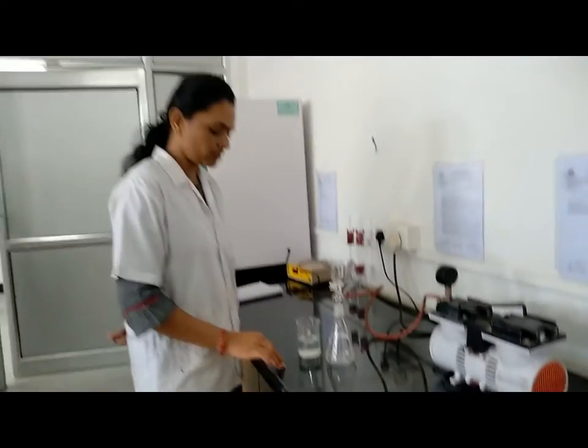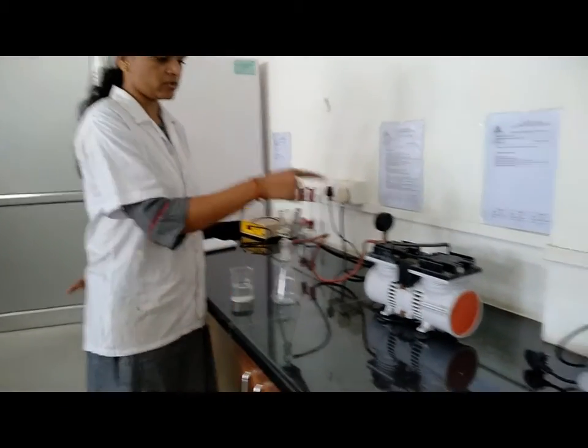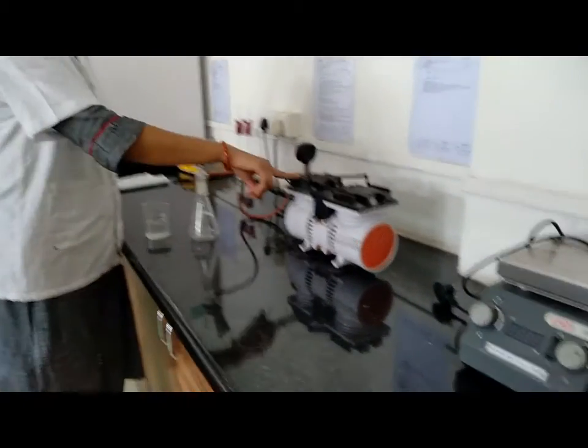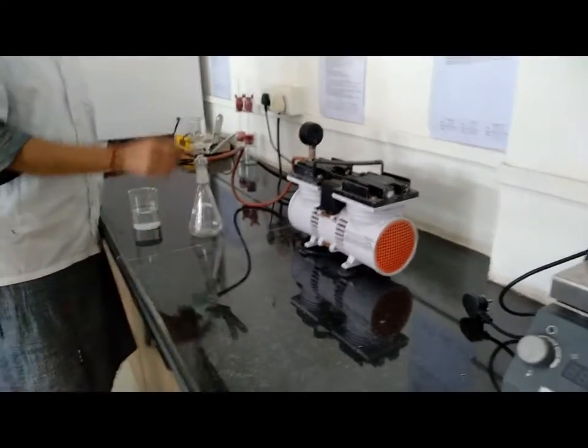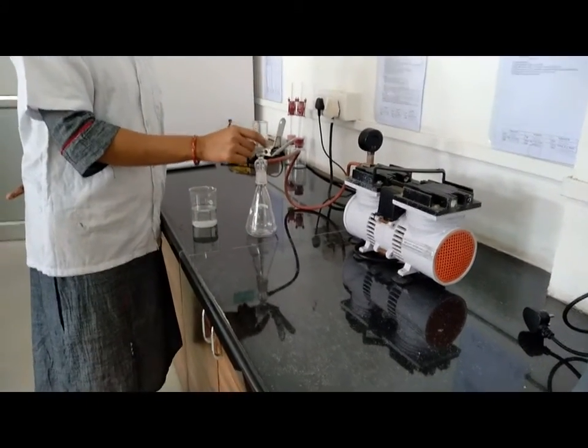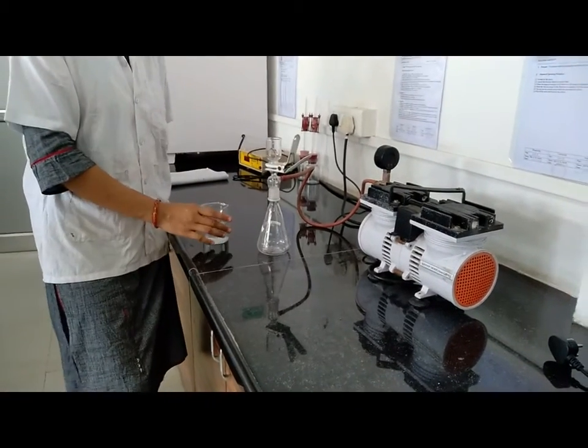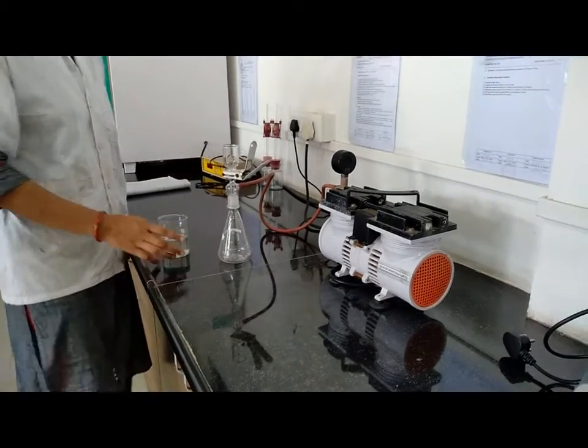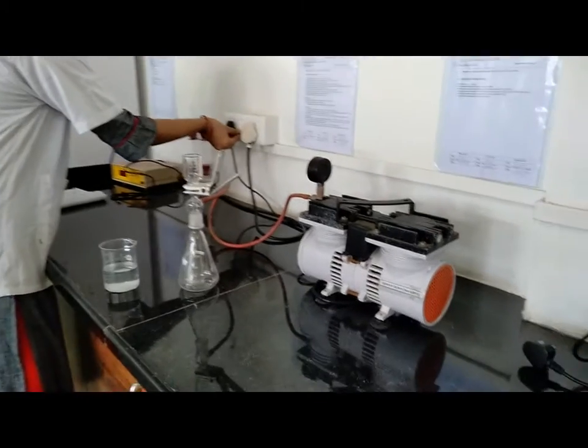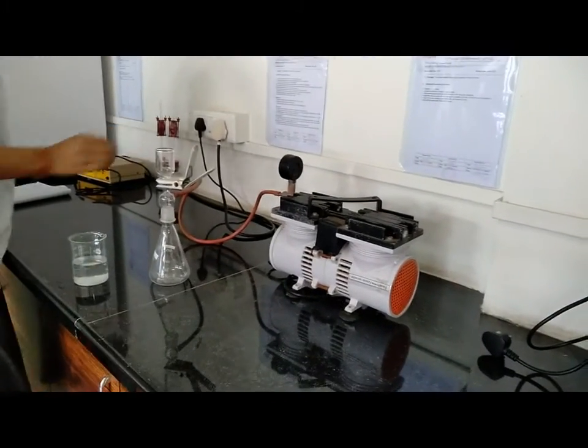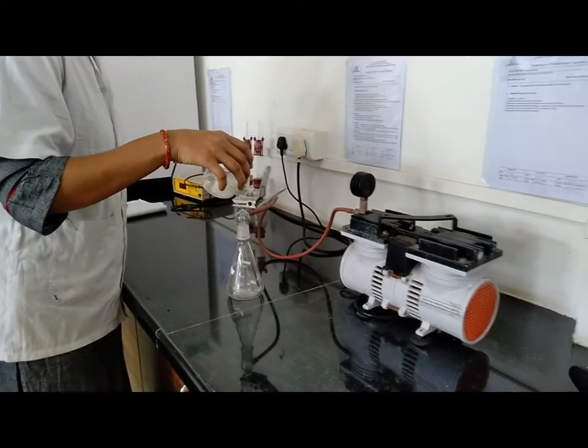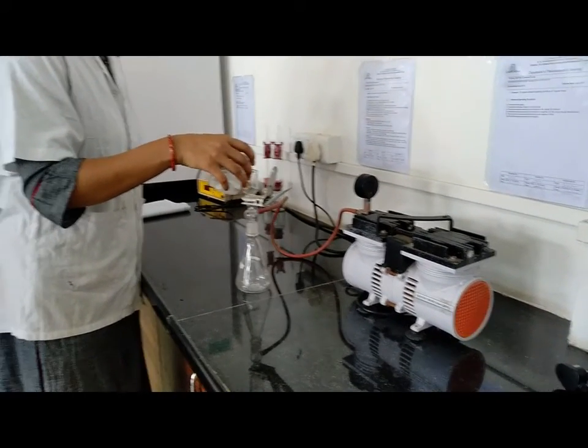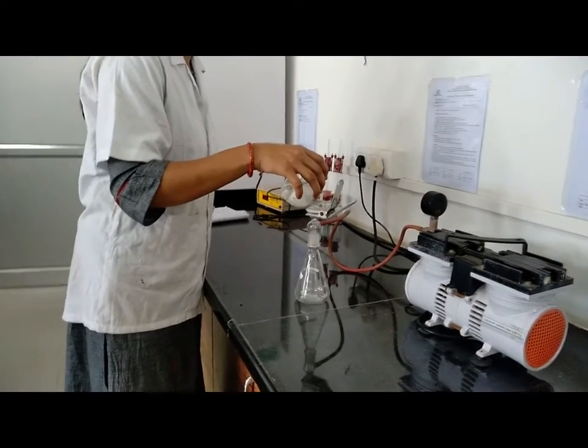We have to filter this white precipitate which we are getting from the synthesis using this filtration pump. This is the vacuum pump, this is the Buchner flask, and this is the funnel. By using this assembly we have to filter the white precipitate. For that we have to start the filtration pump.